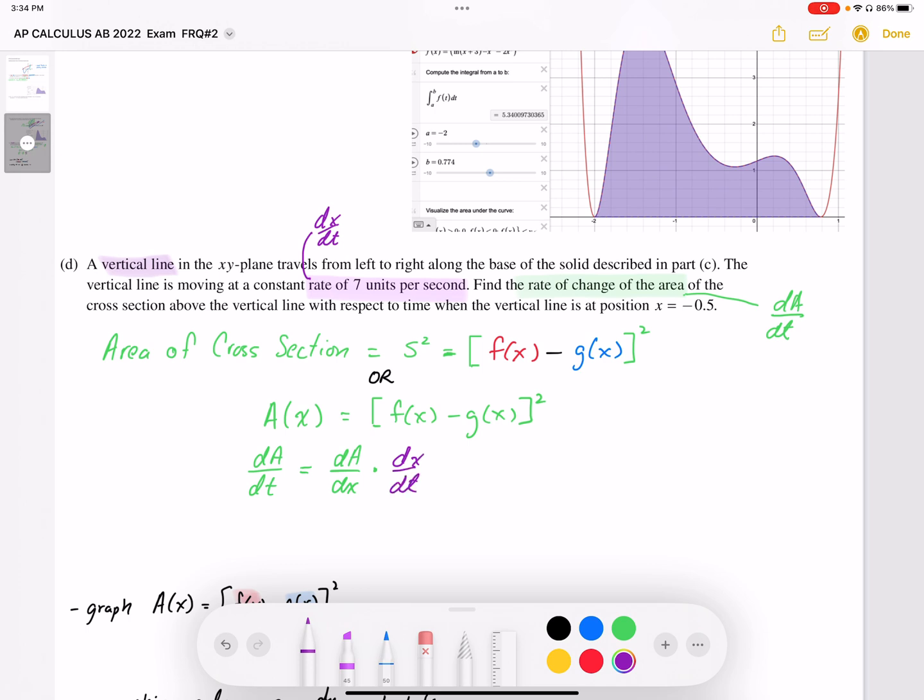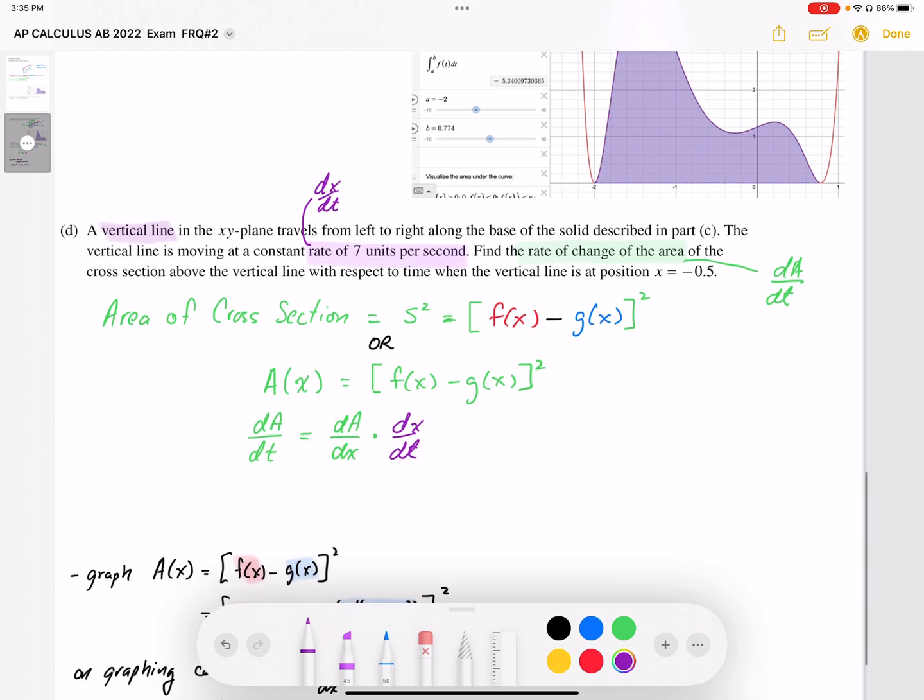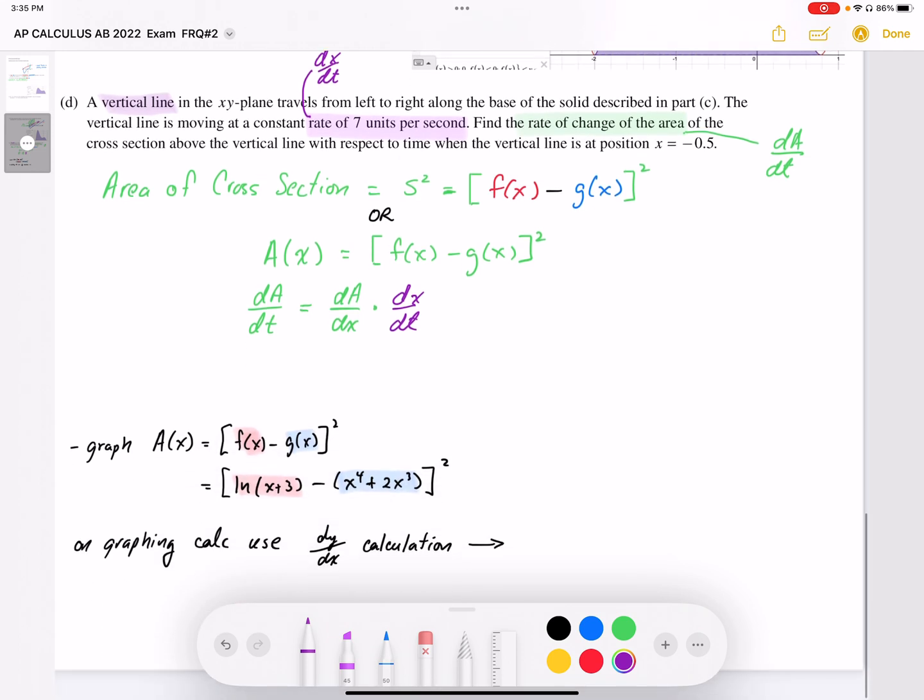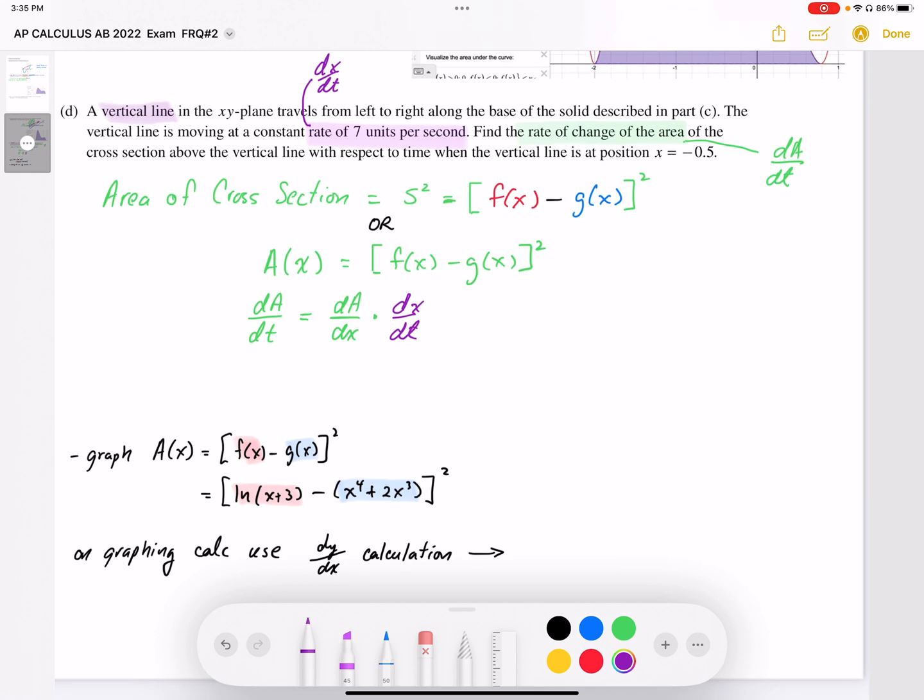So to calculate dA by dt, I need to generate an expression for dA by dx. Now, in this case, I don't really need to differentiate this because what I can do is I can find the derivative at x equals negative 0.5. I can do that right on the graphing calculator.